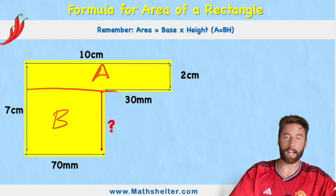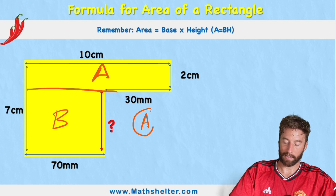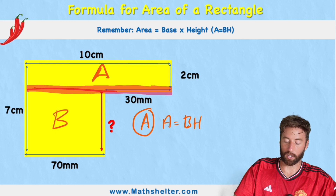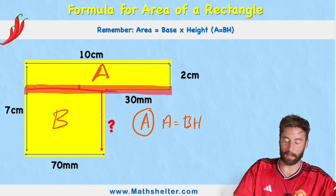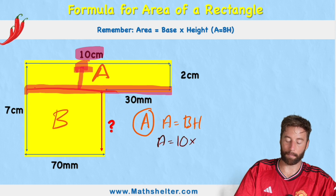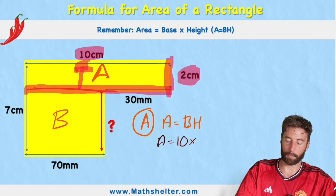First I need to work out the area for shape A. Area equals base times height. In this case we need to find the base — my base would be this line just here. This is the base of rectangle A. We can see if we look opposite, the measurement is 10 centimeters. So we're going to have area equals 10 times... well, what's our height? We can see our height will be over here: 2 centimeters.